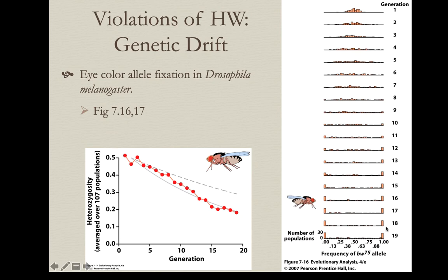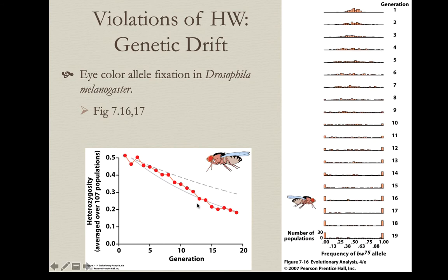By the 19th generation, almost entire fixation occurred in most of these populations. Looking at heterozygosity loss through time, the pattern fits the expectation fairly well, represented by the dotted line. However, heterozygosity was actually lost faster than expected because when you look at the mating behavior of the flies, while there may have been say 30 individuals per vial, some males don't mate — so the effective population size was even smaller, leading to a faster loss of alleles.